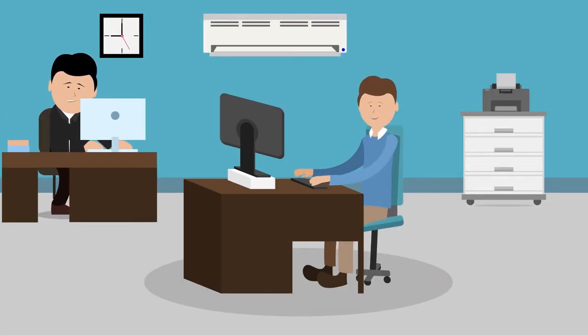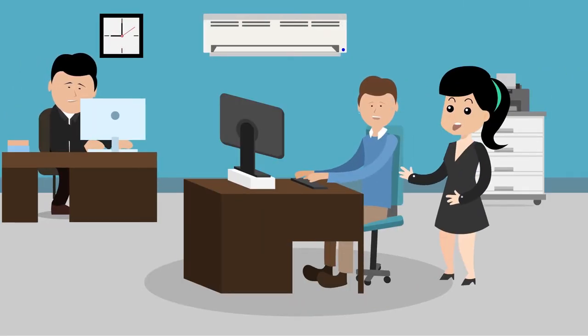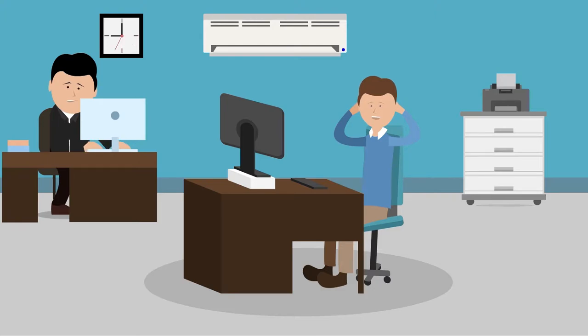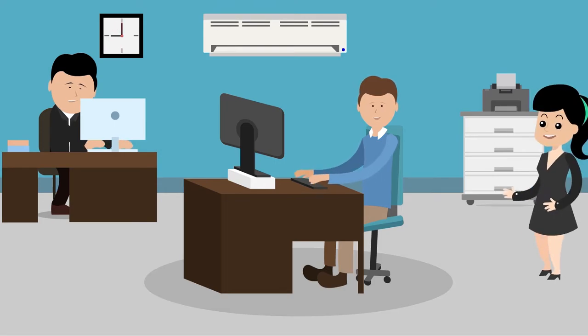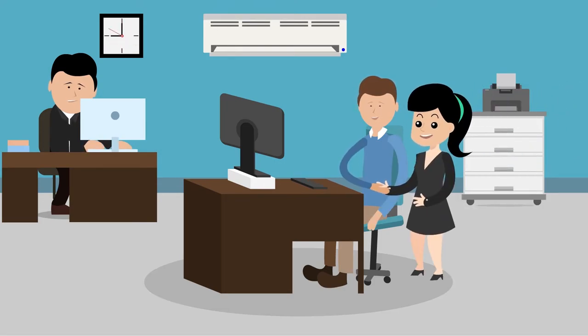Consider an office scenario. Here the boss is really pissed off with the employee. The pressure created by the boss on the employee is the stress. Now the employee gets depressed here, which is called strain. As a result, the employee does the work with perfection. This change in his attitude is deformation.